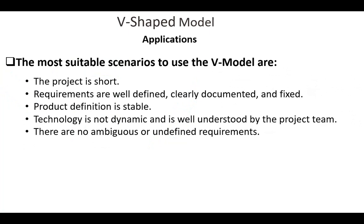Next, applications of the V-shaped model. V-shaped model applications are almost the same as the Waterfall model, as both models are of sequential type. Requirements have to be very clear before the project starts, because it is usually expensive to go back and make changes. This model is used mainly in the medical development field. The most suitable scenarios to use the V-shaped model are: the project is short, requirements are well defined, clearly documented and fixed.